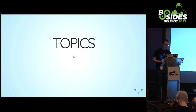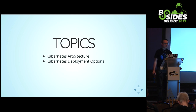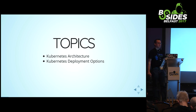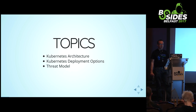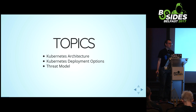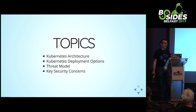So what are we going to talk about? First, Kubernetes architecture - what is this thing, how does it work? I find when I'm securing or trying to break into something, it's a lot easier if I understand how it works. We'll talk about deployment options - there are so many different ways to deploy this. We'll cover threat model, because knowing who is going to attack you and how is really important. Then security concerns - how to fix this stuff, because we can't just say it's broken and walk away.